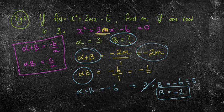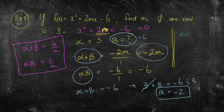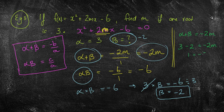Now using the information gathered: alpha plus beta equals negative 2m. We know alpha is 3 and beta is negative 2, so 3 plus negative 2 equals negative 2m. That gives 1 equals negative 2m. Dividing both sides by negative 2, m equals negative 1 over 2.